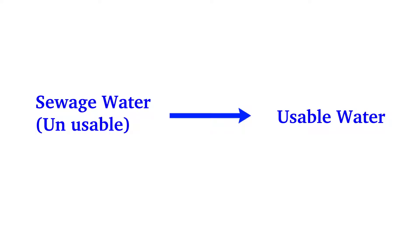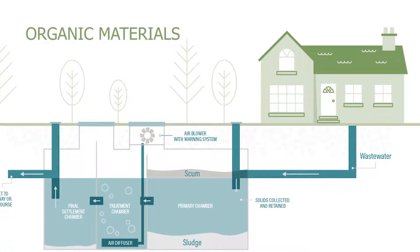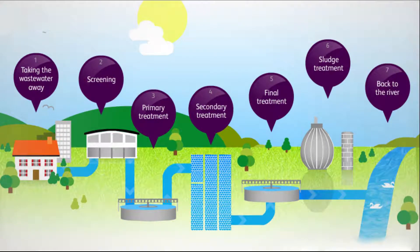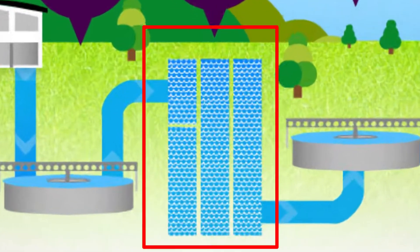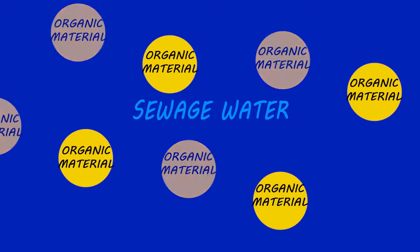Uses of microbes in sewage treatment. Sewage treatment is the process by which water is purified to be used for general purpose. Sewage water majorly comes from households and majorly contains organic material. To get purified, sewage water goes through multiple stages. In one of those steps, microbes are introduced to remove the organic material. They feed on the organic material and remove it from sewage water.